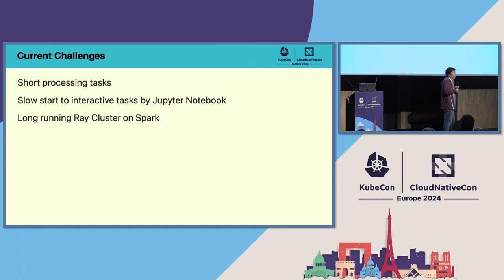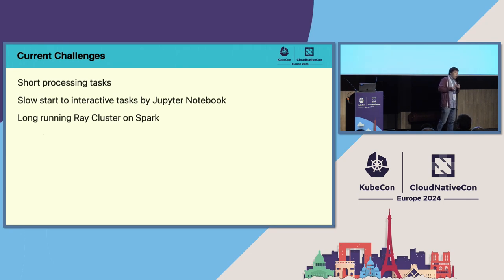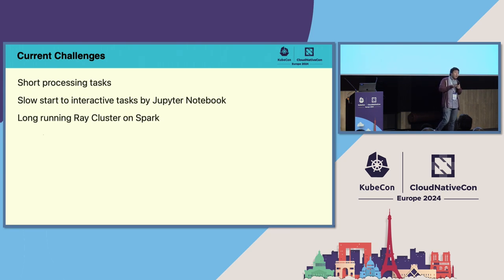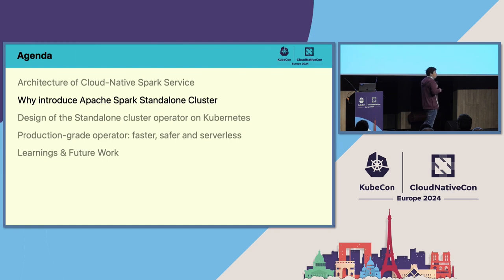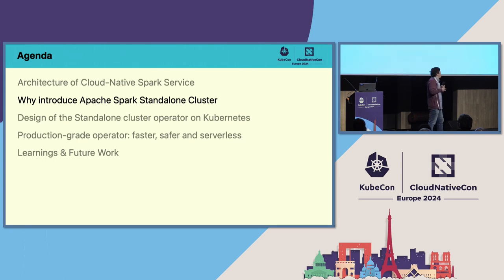Thirdly, Gen AI is of course a very hot topic right now. On our platform, we also try to provide both data parallelism and model parallelism. That's why we are exploring how to run a long-running Ray cluster on top of Spark. However, the existing architecture cannot satisfy this need. That's why we conducted a lot of research to find ways to reduce Spark application startup time and find a new way to run this kind of machine learning framework.